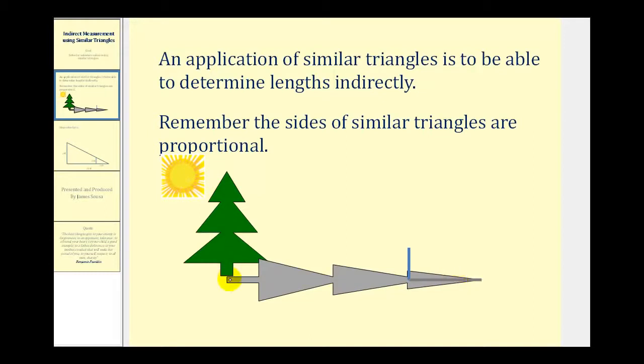So instead of trying to determine the height of this tree by climbing to the top and then somehow trying to drop a tape measure from the top to the bottom, we could use the height and the shadow of a much smaller object to determine the height of the tree.